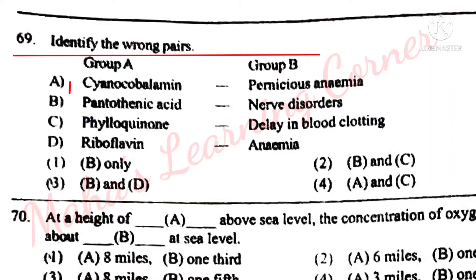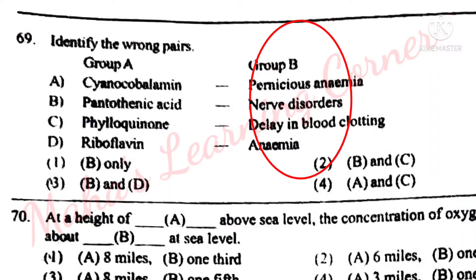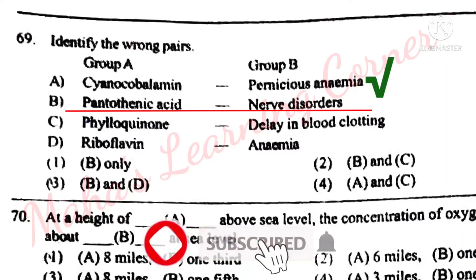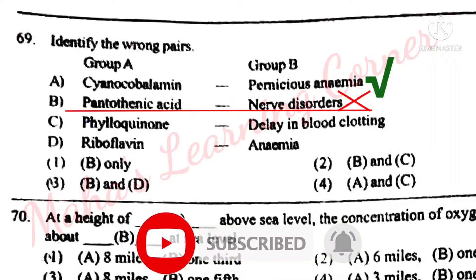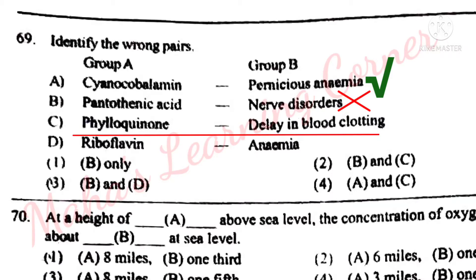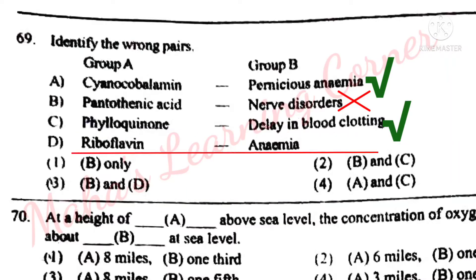Identify the wrong pairs. Group A: vitamins; Group B: deficiency diseases. Cyanocobalamin – pernicious anemia: correct. Pantothenic acid – nerve disorders: this is wrong. Pantothenic acid deficiency causes burning feet. Phylloquinone – delay in blood clotting: this is correct. Riboflavin – anemia: this is wrong. Riboflavin deficiency causes glossitis. So B and D are wrong pairs. Option 3 is the correct answer.